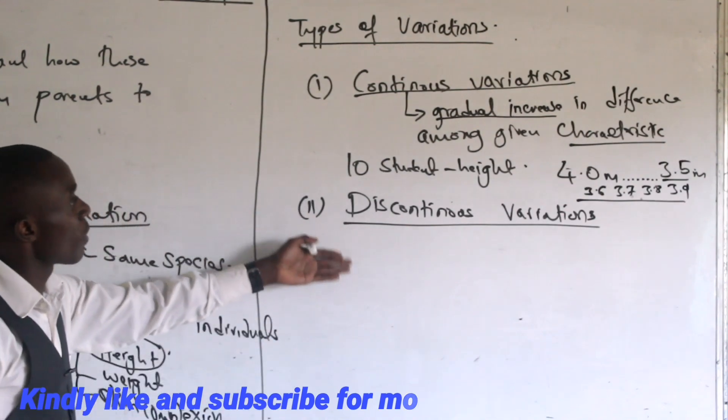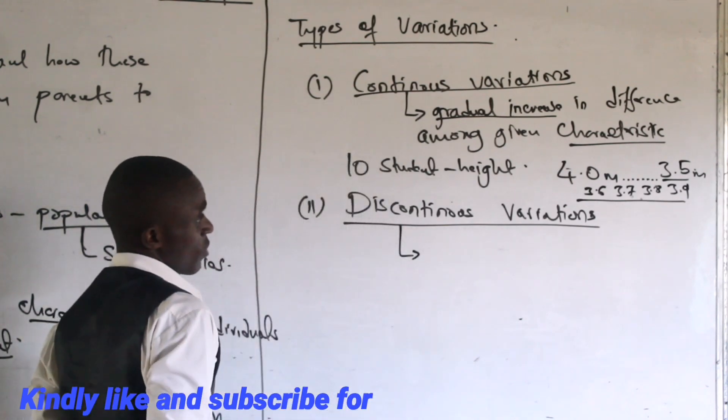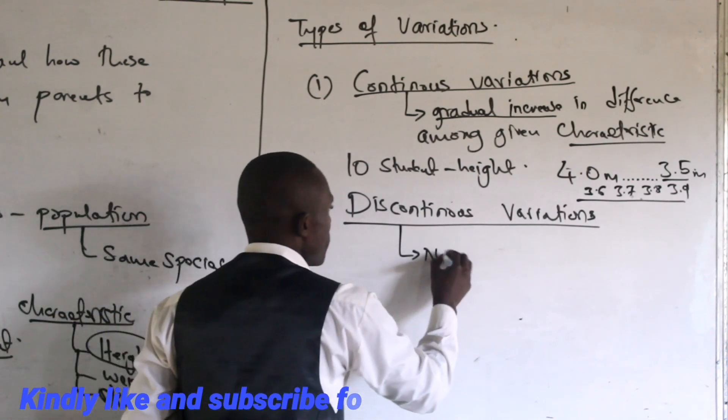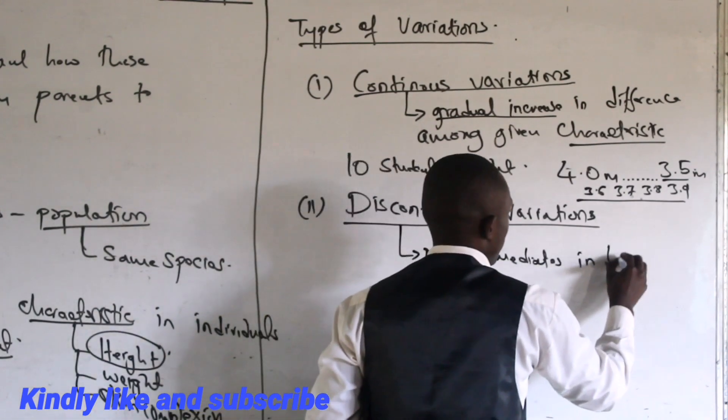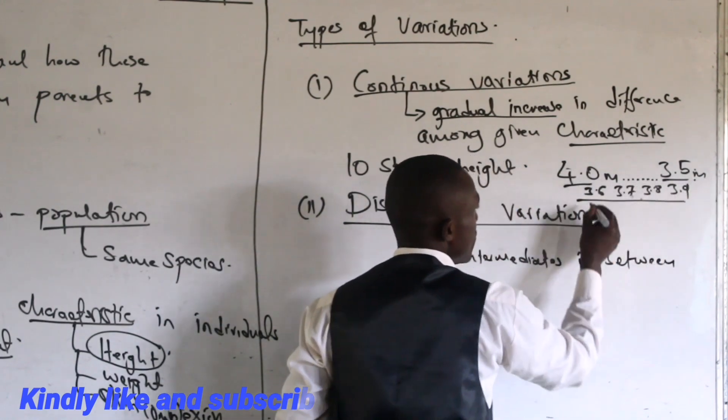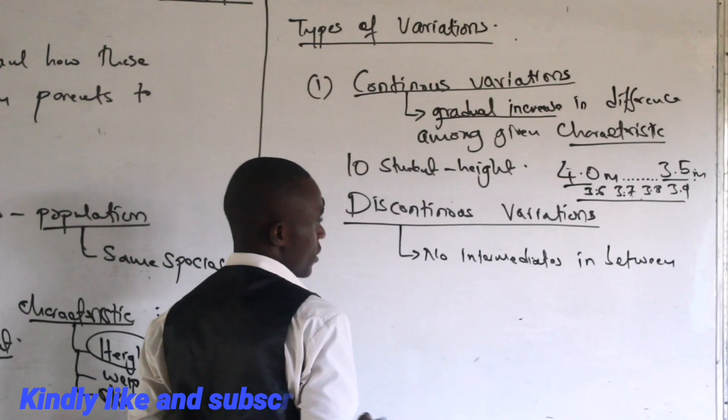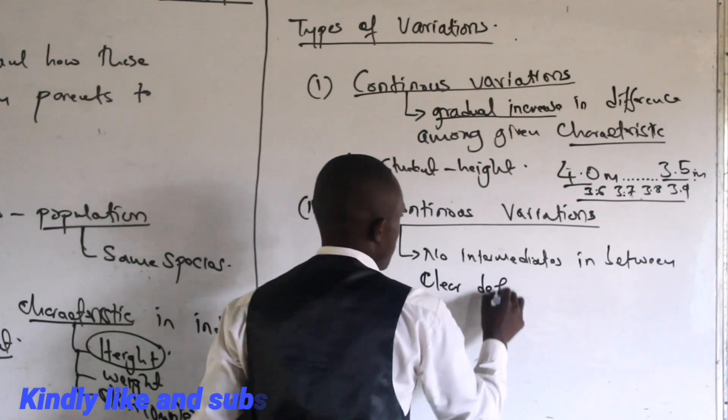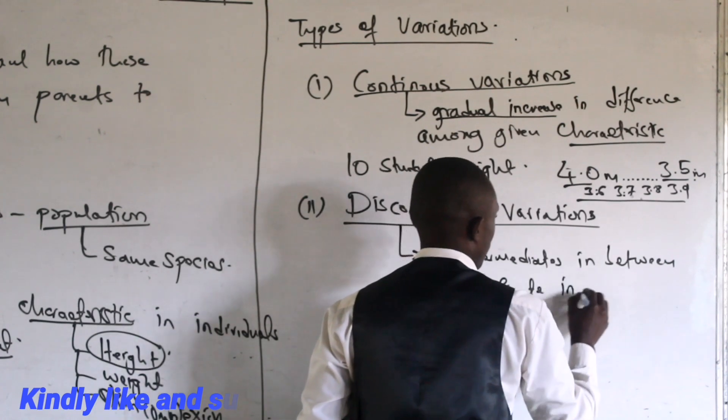When we talk about discontinuous variation, for example you're focusing on a certain characteristic, we are going to have no intermediates in between. You can see we have intermediates between 4.0 and 3.5 meters - 3.6, 3.7, 3.9 - but in discontinuous variation, we don't have intermediates. There are clear definites in characteristics.